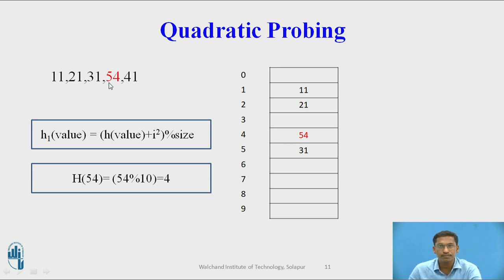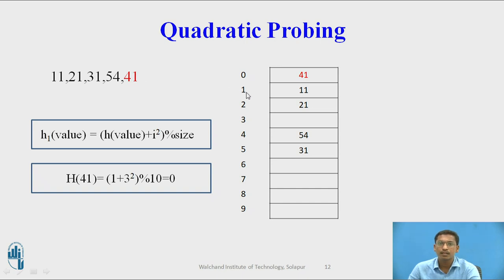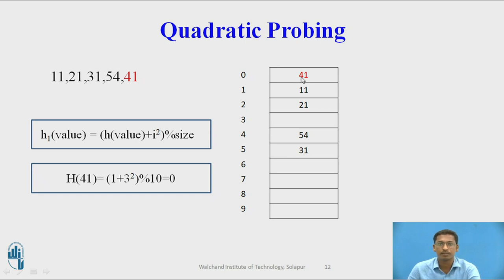Next element is 54. Calculate 54 mod 10 = 4. Index 4 is free, so 54 is directly inserted at index 4. Next element is 41. Calculate 41 mod 10 = 1; index 1 already has element 11, so quadratic probing is used with i = 3: (1 + 3²) mod 10 = (1 + 9) mod 10 = 0. So 41 is inserted at index 0.